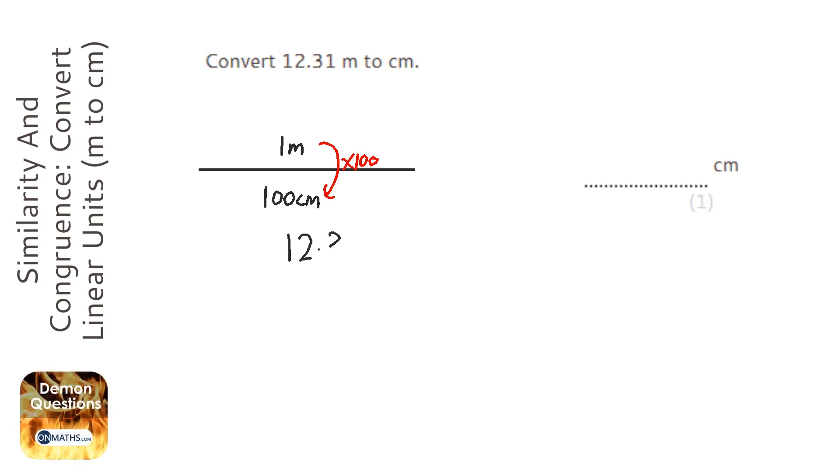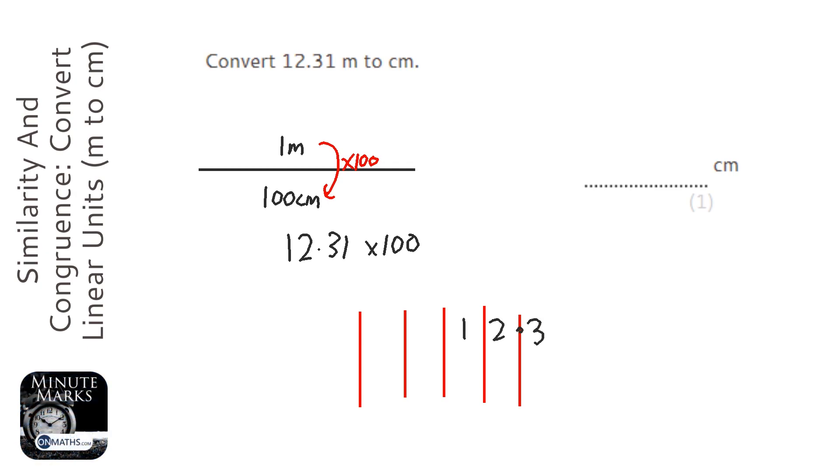So 12.31 times 100, and what I can do here is put it into a grid. So we're going to have 12.3 and haven't got enough, one. And when you times by 100...